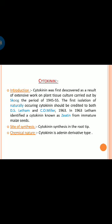Cytokinin was first discovered as a result of extensive work on plant tissue culture carried out by Skoog during the period of 1945 to 1955. The first isolation of naturally occurring cytokinin should be credited to both D.S. Letham and C.O. Miller. In 1963, Letham identified a cytokinin known as zeatin from immature maize seed.